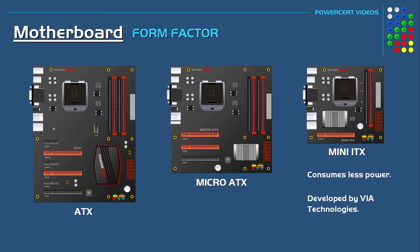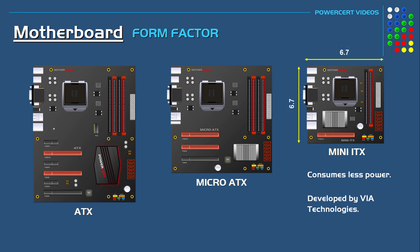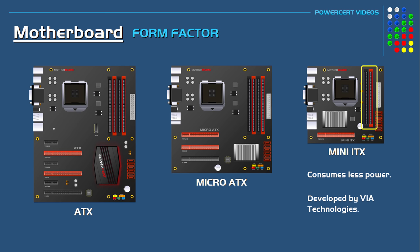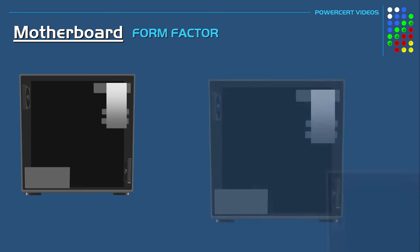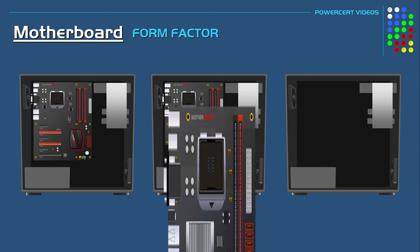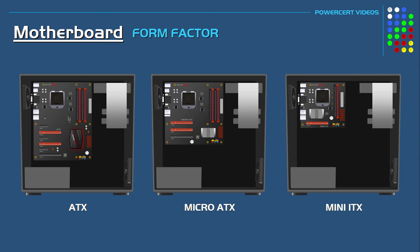ITX was developed by Via Technologies and comes in different sizes. The Mini ITX is 6.7 by 6.7 inches, about half the length of an ATX board. Because it's so small it has only one expansion slot compared to ATX and Micro ATX, and it will only have two memory slots where the ATX and Micro ATX will have at least four. The Mini ITX will fit into the same computer case meant for the ATX and Micro ATX.